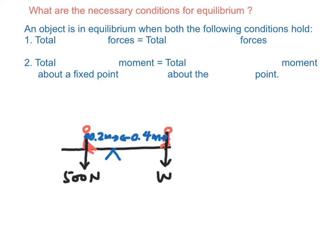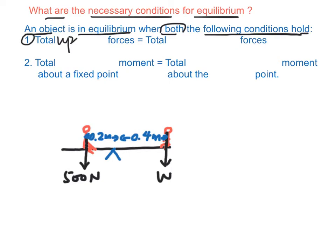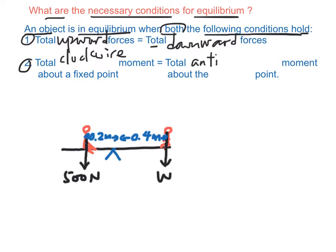What are the necessary conditions for equilibrium? An object is said to be in equilibrium when both the following conditions hold. First, the total upward forces should be equal to the total downward forces. Second, the total clockwise moment equals the total anticlockwise moment. Notice that both the clockwise moment and the anticlockwise moment should be taken about the same point.